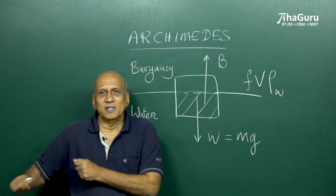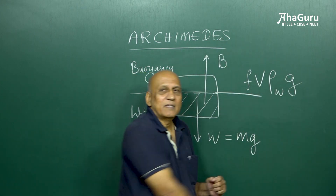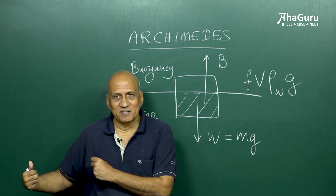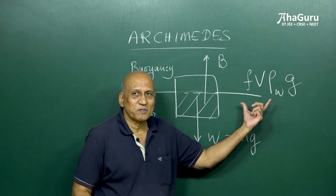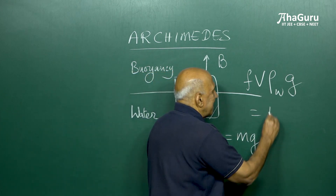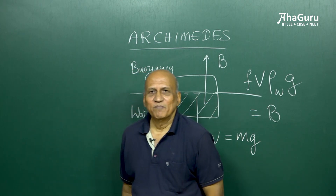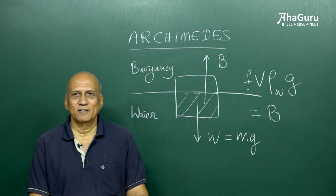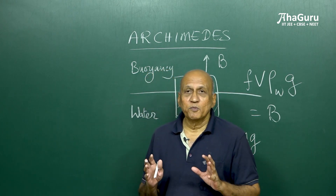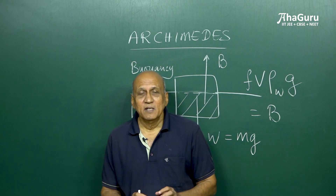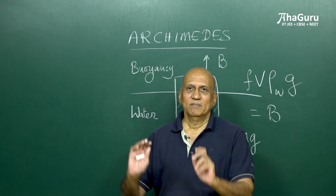Multiplying by g gives the weight of the liquid displaced. According to Archimedes, the weight of the liquid displaced is equal to the buoyancy force. So Archimedes told us that the buoyancy force produced by a fluid on an object is equal to the weight of the fluid displaced. That is the formula.